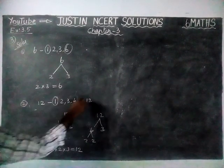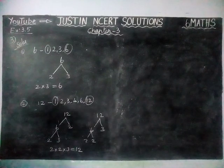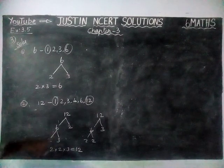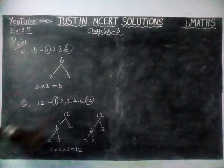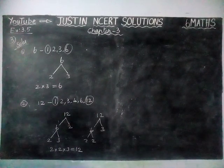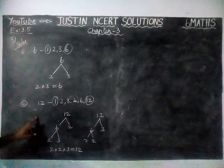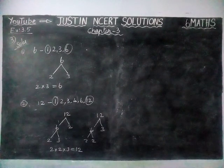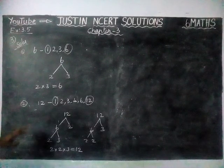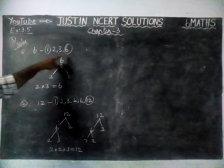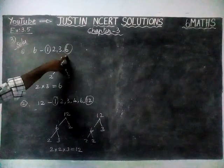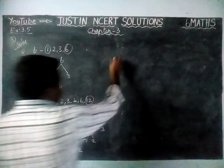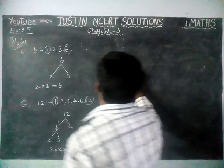Here also, 1 and 12 are not included when we are factorizing. So from this, what we are concluding is: when we are finding the prime factorization of a composite number, 1 and itself are not included.